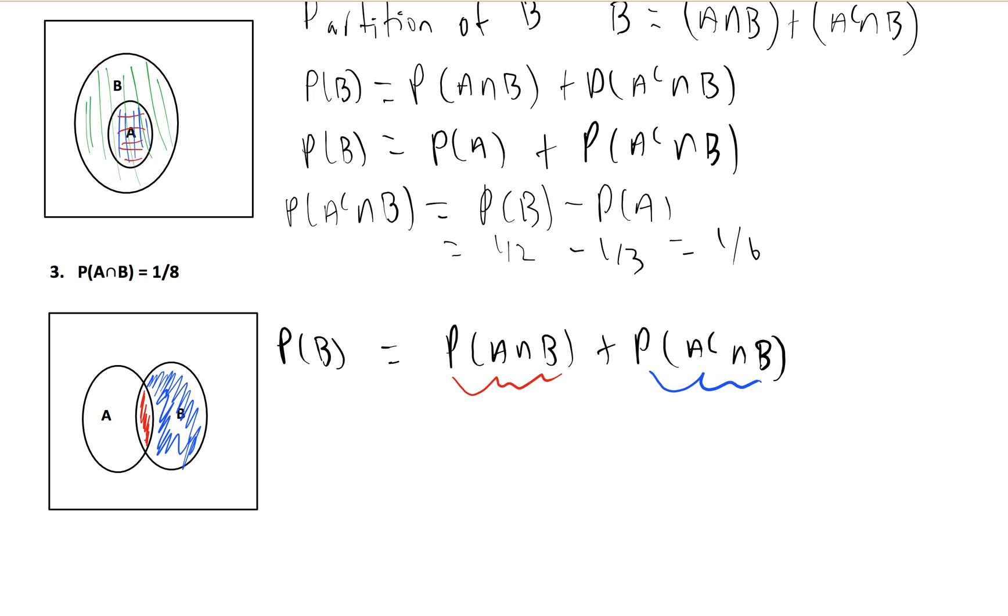Now, as we fill this out, since we're given what the intersection of A and B is, we have one eighth here. And we know B is a half, plus P of A complement intersect B, leaving us with A complement intersect B equals one half minus one eighth, which equals three eighths, and we're done.